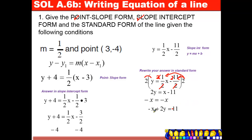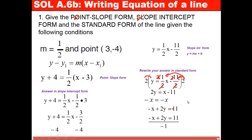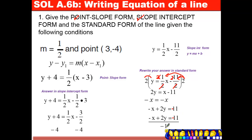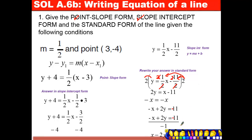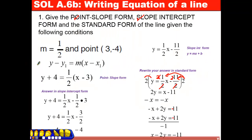Since x here is negative, I need to divide everything by negative 1. When you divide everything by negative 1, the coefficient of x becomes positive. So we will have x minus 2y equals positive 11. This would be our standard form.